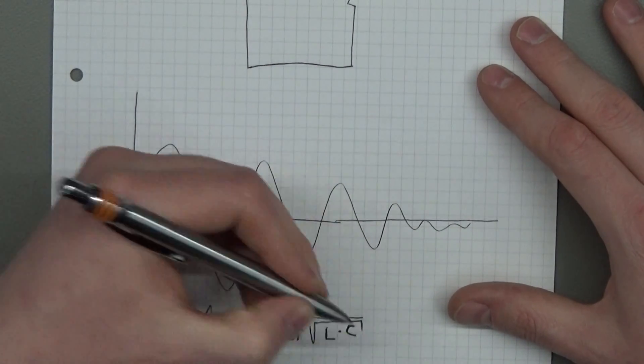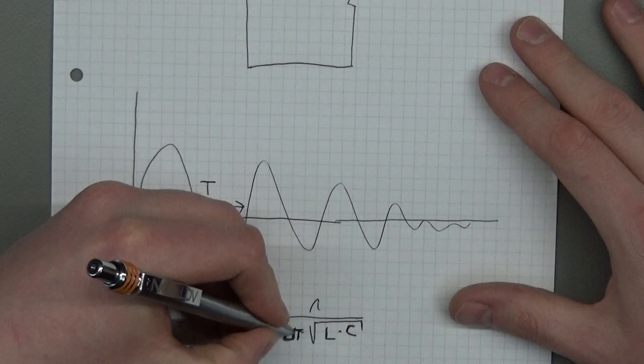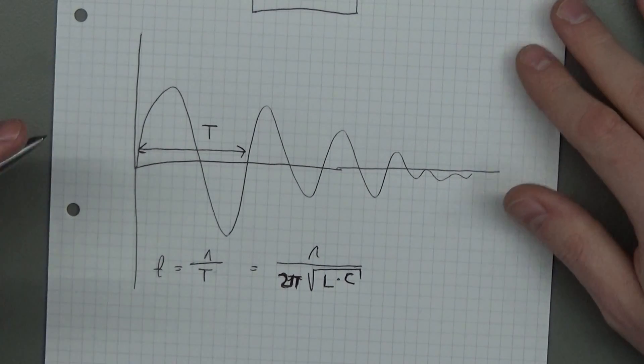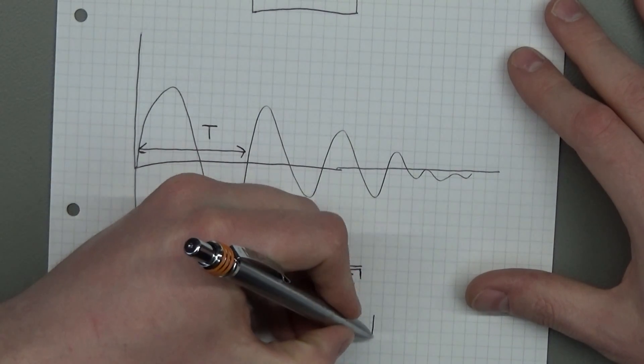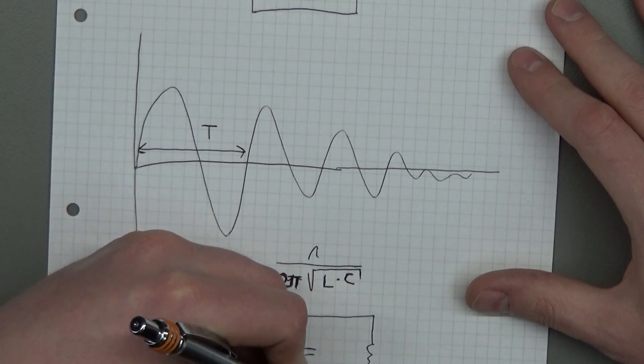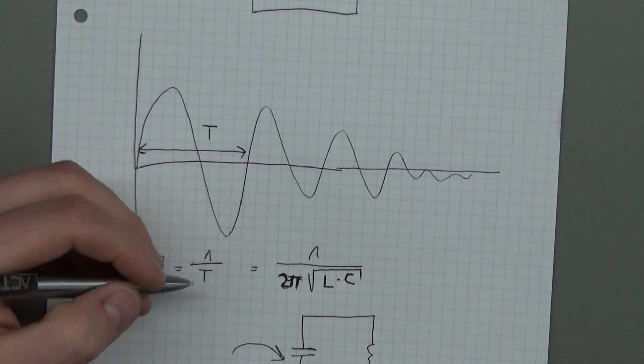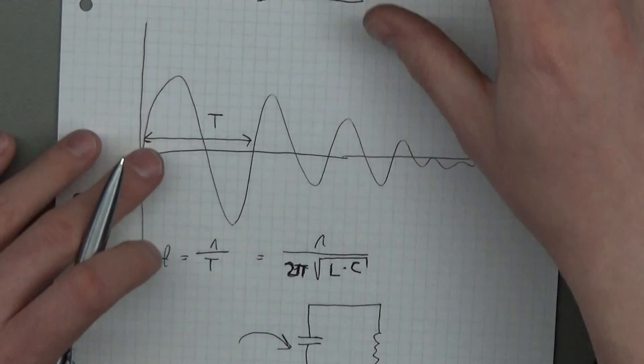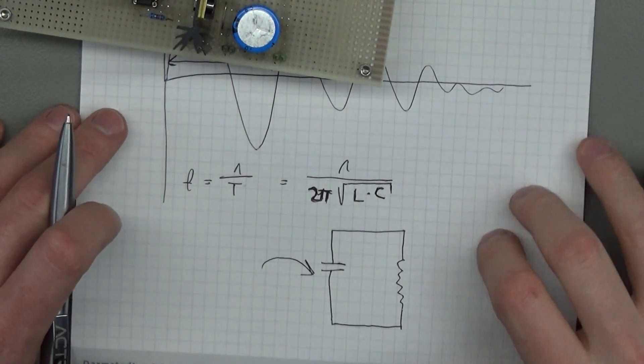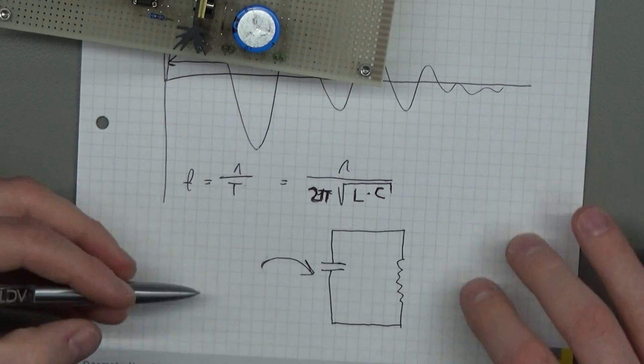And I thought to myself, would it be possible to build such a circuit with only these two components and to insert energy into this circuitry controlled by a microcontroller, so that you can insert some energy and keep the oscillation going?